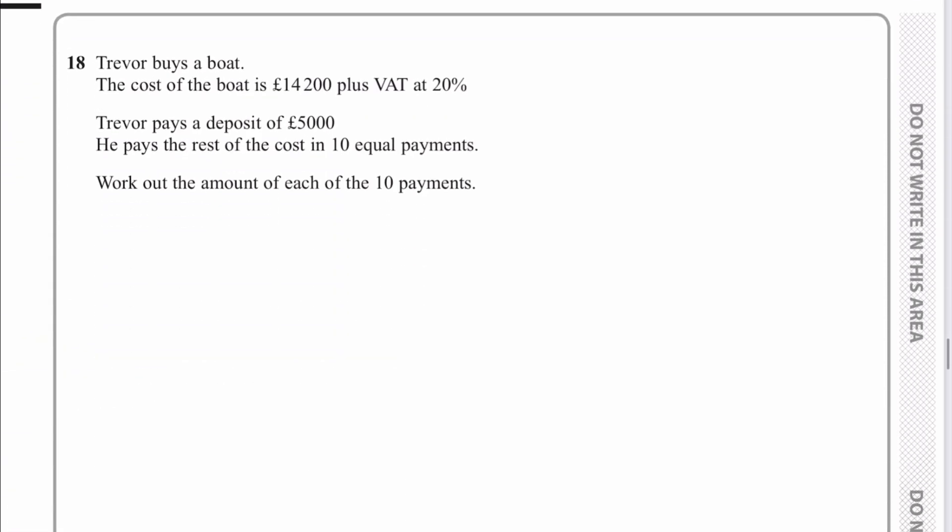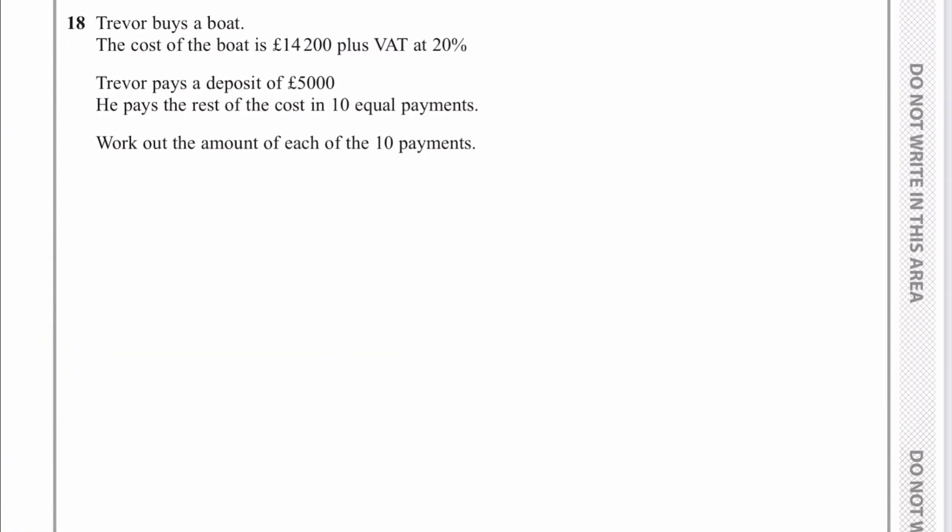Let's move on then to question number 18, which is all about Trevor buying a boat. Cost of the boat is that plus VAT at 20%. Now I'm going to stop there because what I'm going to do first of all is I'm going to work out this bit of information here. Bearing in mind, it is a calculator paper, so it's not too difficult because what we're saying is it's 14,200 plus 20%. Well, it's the same as saying 14,200 multiplied by 1.2. You can do it that way, or you can do 10%, double it, and then add it to 14,200. Hopefully, you'll get an answer of 17,040, which is the total amount of money that Trevor pays. He pays a deposit, then, of 5,000 pounds.